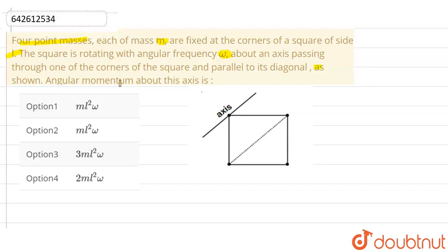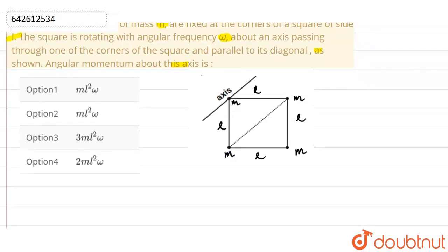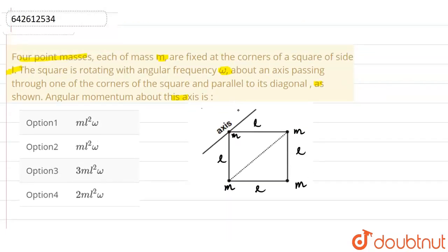We have a square of side length L with four masses of mass m fixed at its corners. We have to calculate the angular momentum about this axis.